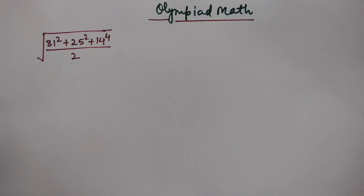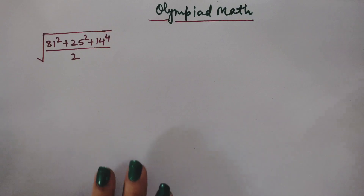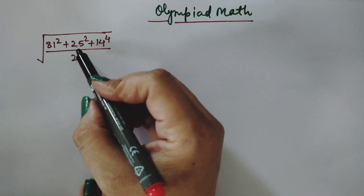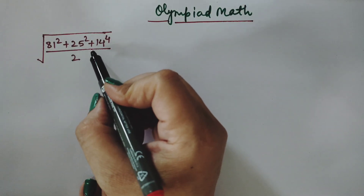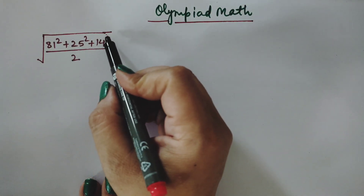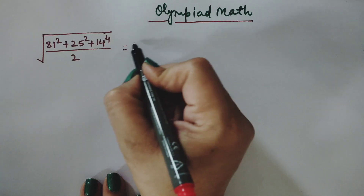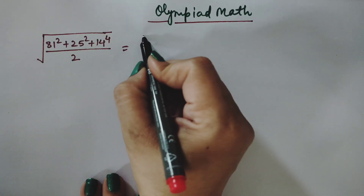Hello everyone, welcome to my YouTube channel Waves of Mathematics. Today we are going to solve a very interesting olympiad math question: the square root of 81 squared plus 25 squared plus 14 to the power 4, divided by 2.